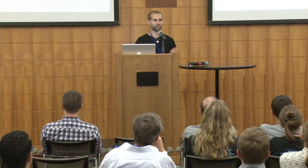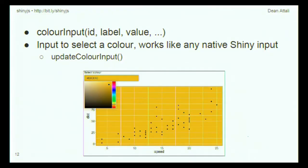One more thing ShinyJS provides is a color input. A lot of times when people want to let users select colors, they put a dropdown with color names. Instead, you can use a color input, which gives you a nice palette to choose from.